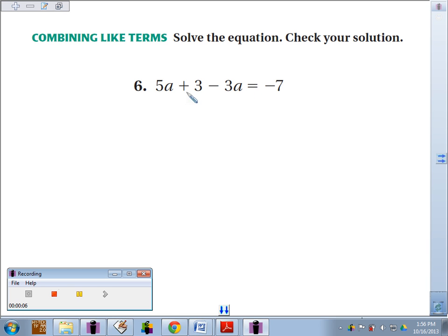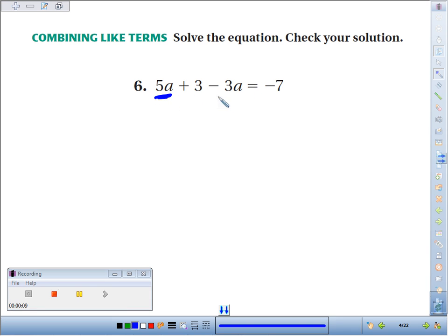We always want to simplify before we fence post. We can combine like terms, 5 apples minus 3 apples would leave 2 apples or 2 a's. We still have the plus 3 equals negative 7.